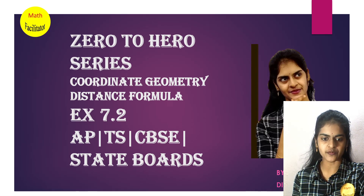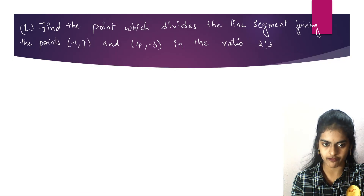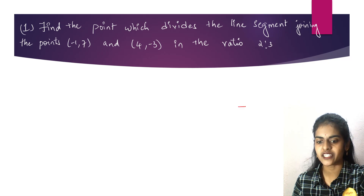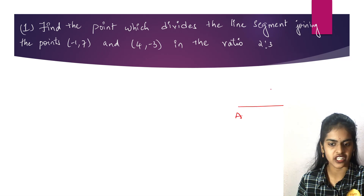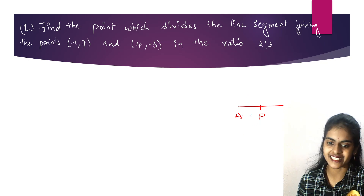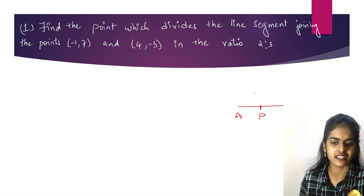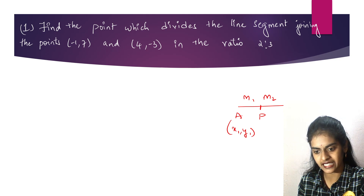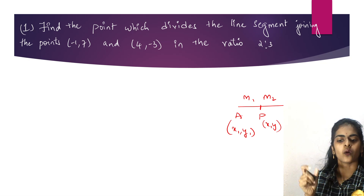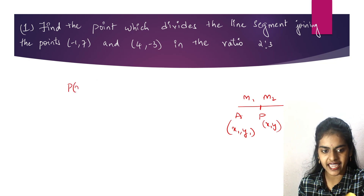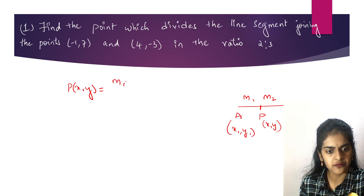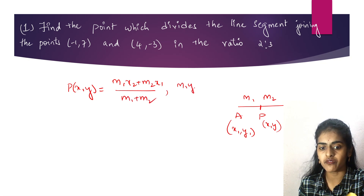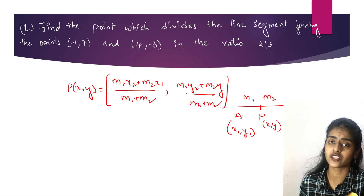Exercise 7.2 is basically completely dependent on the section formula. So I hope you all know the section formula. If you have points A and B, and if you have a point P — now if this point P is dividing the line joining A and B in the ratio M1 is to M2 — taking A as (X1, Y1), B as (X2, Y2), and P as (X, Y), you can write the coordinates of P as: X = (M1·X2 + M2·X1) / (M1 + M2) and Y = (M1·Y2 + M2·Y1) / (M1 + M2). You have to remember this.